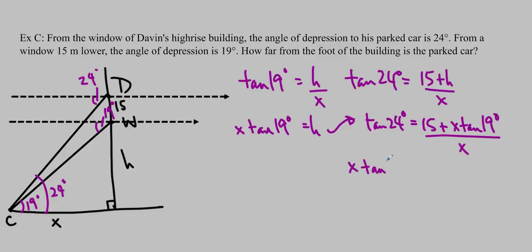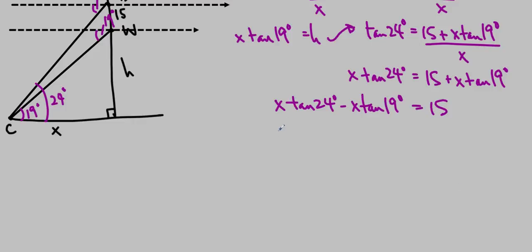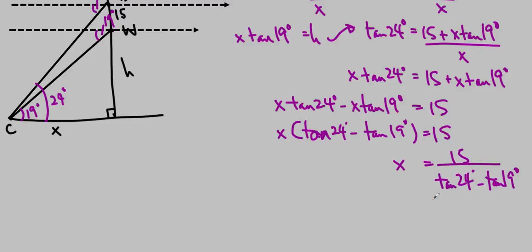I'm going to cross multiply. So this becomes X tan 24 degrees equals 15 plus X tan 19 degrees. Now we just have to solve for X. First of all, we'll move all of the X's to one side. So we get X tan 24 degrees minus X tan 19 degrees equals 15. And then we will common factor out the X. X times tan 24 degrees minus tan 19 degrees is equal to 15. And then we can divide this out. So X is equal to 15 over tan 24 degrees minus tan 19 degrees. We type that into our calculator. And we get X is approximately equal to 148.7 meters. And that's our answer.